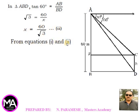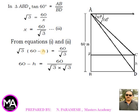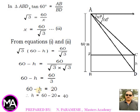From equations 1 and 2: √3(60-h) = 60/√3. So 60-h = 60/(√3 × √3) = 60/3 = 20. Therefore h = 60 - 20 = 40. The height of the pole is 40 meters.